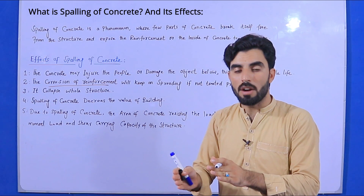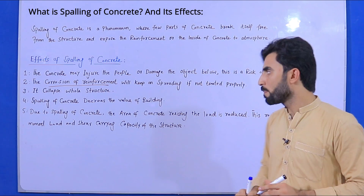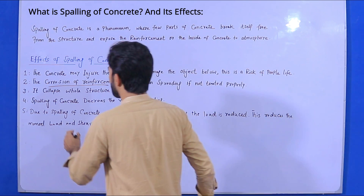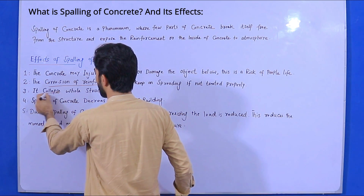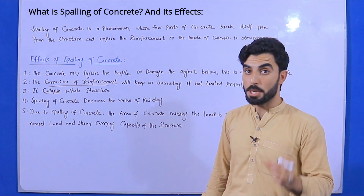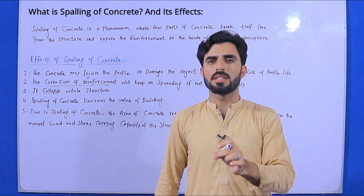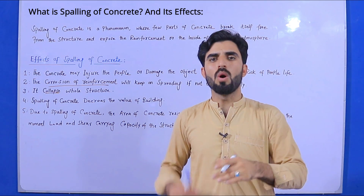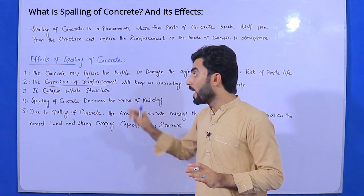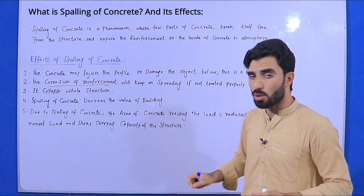Otherwise the corrosion and spalling of concrete will keep spreading. The third effect: it can collapse the entire structure — meaning beams, columns, and slabs — and can fail the whole building. So therefore it can collapse the entire structure.